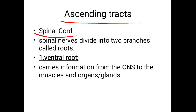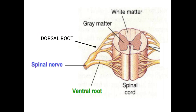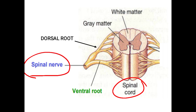In the spinal cord, spinal nerves are present. These spinal nerves enter the spinal cord through two roots: one is the ventral root and another is the dorsal root. From the peripheral part of the body, nerves enter the spinal cord either through the dorsal root or the ventral root.